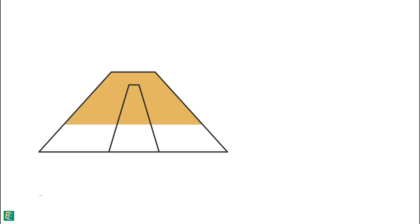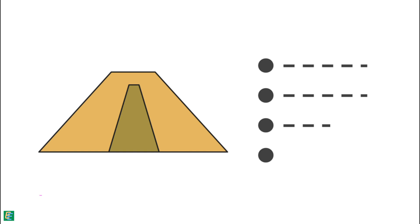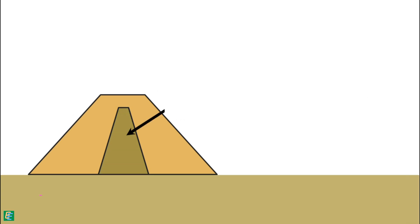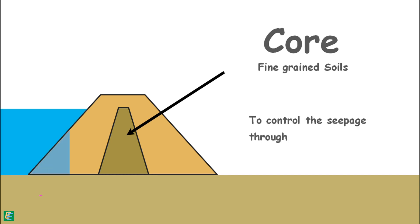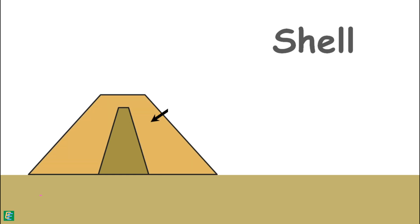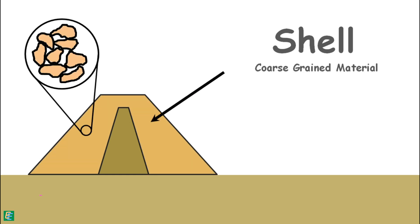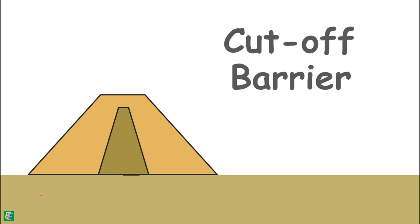In practice, dam sections are more complex, but we can identify a few basic components required in the design of an earth dam. First is the core, made up of fine-grained soils — its purpose is to control seepage through the dam. Second is the shell, usually constructed with coarse-grained material, which provides stability to the dam. Third is the cutoff barrier beneath the dam, which prevents seepage through the foundation.